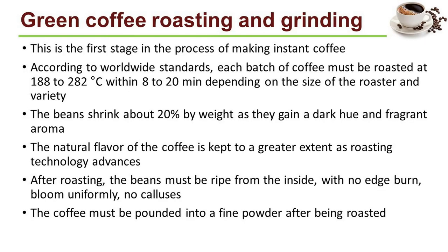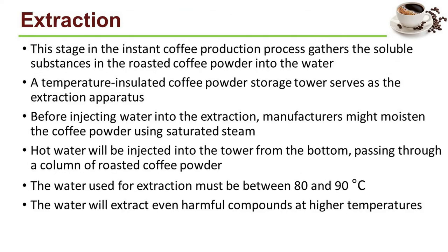The first step is green coffee roasting and grinding. According to worldwide standards, each batch of coffee must be roasted at 188 to 282 degrees Celsius within 8 to 20 minutes, depending on the size of the roaster and variety. The beans shrink about 20% by weight as they gain a dark hue and fragrant aroma. The natural flavor of the coffee is kept to a great extent as roasting technology advances. After roasting, the beans must be ripe from the inside with no edge burn, bloom uniformly, and no calluses. The coffee must be pounded into a fine powder after being roasted.